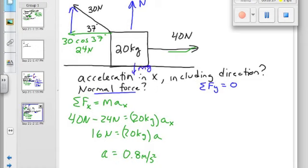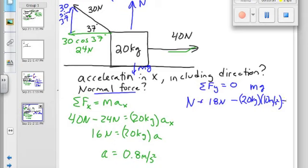What's this mean? 30 sine 37, which is 18. Now you know why I use 37. It makes pretty numbers. We have normal force up, plus 18 newtons up, minus mg, which is 20 kilograms times 10 for gravity. This equals zero.